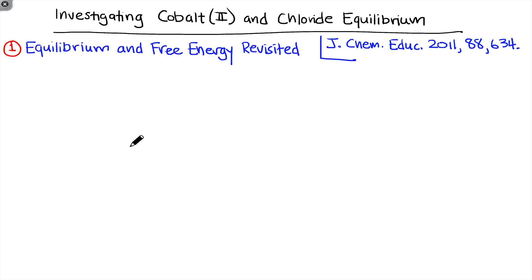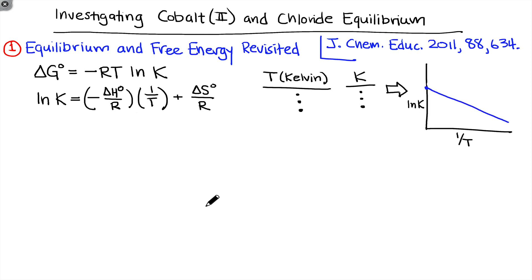So to begin with this experiment, we really need to take a step back and look at the relationship between equilibrium and free energy. And we've seen this previously in the solubility and temperature experiment. So the standard free energy change, delta G°, is related to the equilibrium constant of a reaction K. And this is true of any chemical reaction. We can rearrange this equation and incorporate the enthalpy and entropy change to obtain this equation, which relates the natural log of the equilibrium constant to the inverse of the temperature in Kelvin and also incorporates that enthalpy change and entropy change. What this equation allows us to do is make measurements of the reaction temperature and the corresponding equilibrium constant.